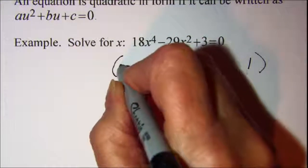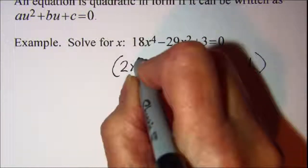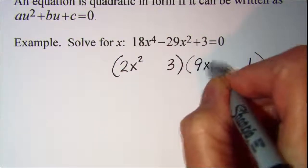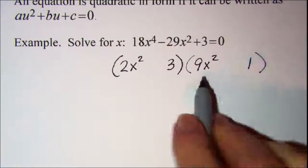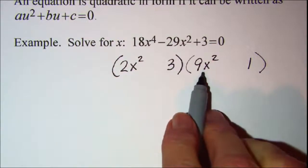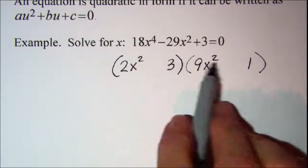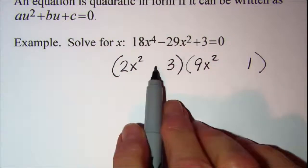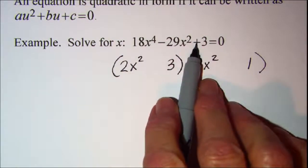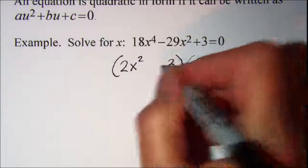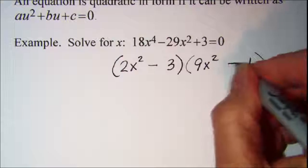So I'm going to write 2x squared here in the front and then 9x squared in the front of the second factor. Now we need to have both signs the same because this third term is positive. And we can see that they both have to be negative. So I'll put my negative signs in here.